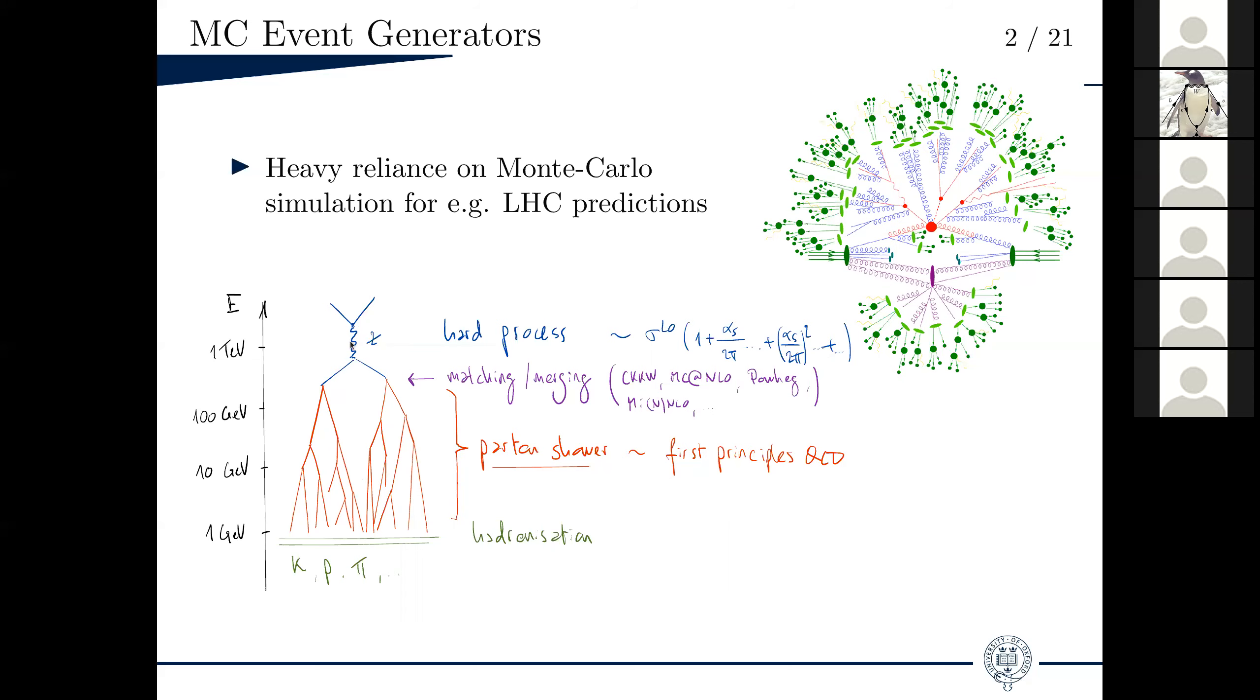At the core of the Monte Carlo generator, you have your hard matrix elements for your process of interest. Say, in this case, E plus E minus to Z to Q Q-bar. This matrix element, you can compute perturbatively in an expansion of the couplings. If you're only interested in QCD corrections, you expand in alpha S, and you get your differential or inclusive cross-section at leading order, next to leading order, next to next, and so on.